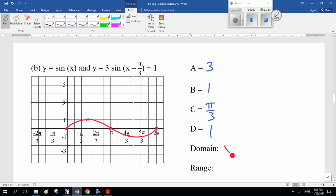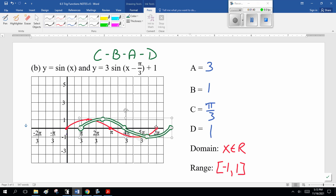That's the original function. The domain, it's all real numbers. Range, minus 1 to 1. So we do our phase shift, c first, pi over 3 to the right. So, this graph moves pi over 3 to the right. It starts at pi over 3 instead of 0. Notice it goes a little bit beyond.